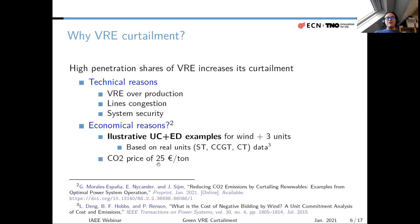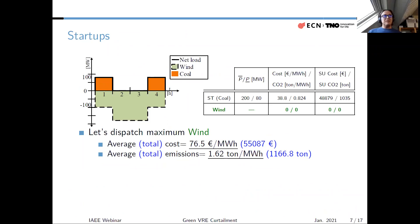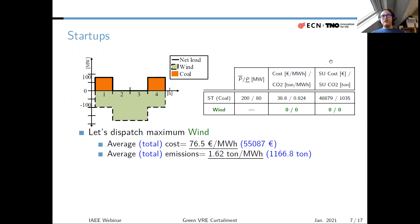For these examples, there is a CO2 price of 25 euros per ton already internalized in the bids. The cases are based on realistic data taken from the referenced paper. Let's start with the first example — it's about startup of units. Here we have a residual or net load shown as the solid black line, which is what remains after wind is producing at maximum. The other unit is a coal unit with maximum output of 200 MW, minimum output of 80 MW, and variable cost of 38.8 euros per megawatt hour.